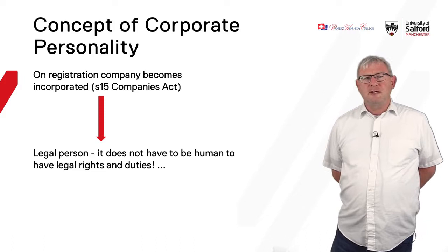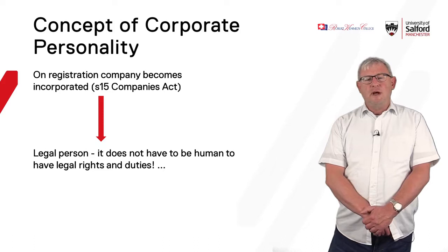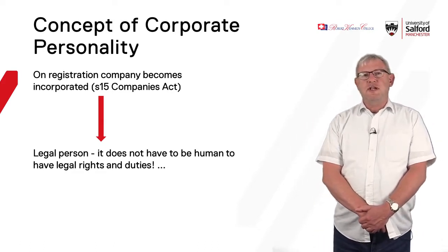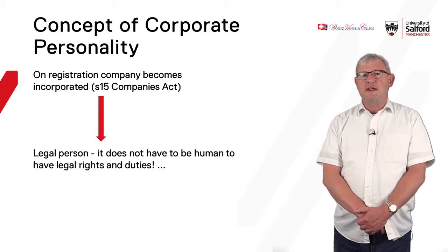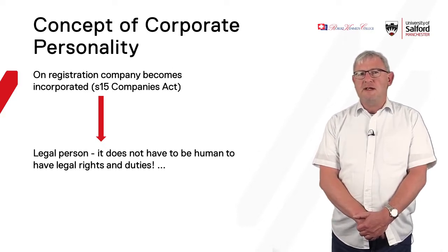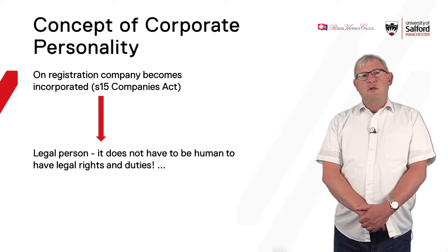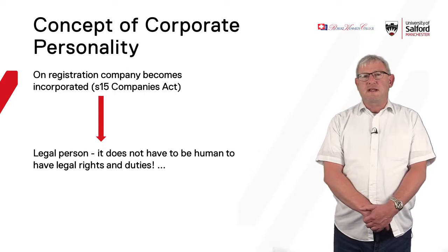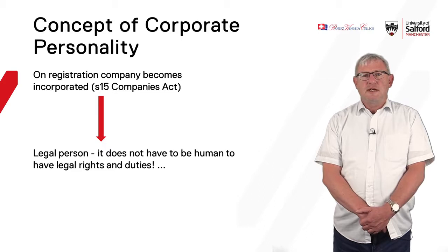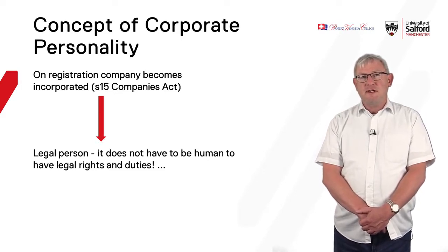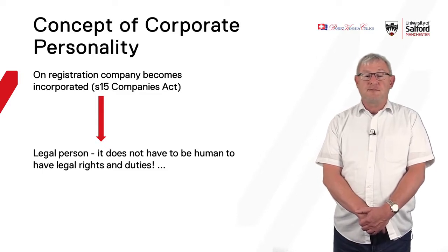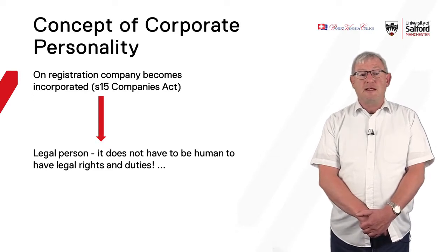So what is the concept of corporate personality? Essentially, when a company is registered, you complete the registration forms and file them at the registry called Companies House. Once those forms have been checked off by Companies House and everything is approved, the company will be incorporated. The procedure for this is set out in Section 15 of the Companies Act 2006. As soon as the company is incorporated, it effectively becomes a legal person, just like you and I. It receives an incorporation certificate, which is like the birth certificate of an individual. The company then has a separate existence from those that own and manage it, with legal rights and legal duties.